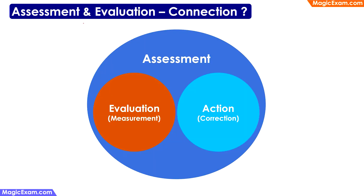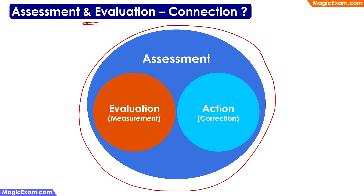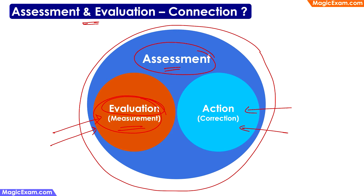The first thing we will try to understand is the connection between assessment and evaluation. Assessment is more holistic in nature — it is a much bigger concept and can include evaluation. Evaluation is just measurement; you are measuring the learning of a child. Whereas assessment includes the measurement of learning and also the corrective action you are going to take on the basis of what you learn from that measurement. If your measurement shows gaps in a child's learning, you look at the reasons behind those gaps, whether the issue is with the child or the teaching process, and take corrective action. Therefore, assessment includes measurement and the action taken on the basis of that measurement.